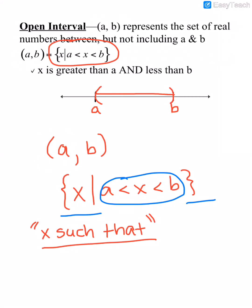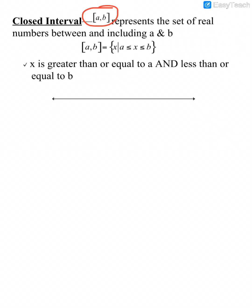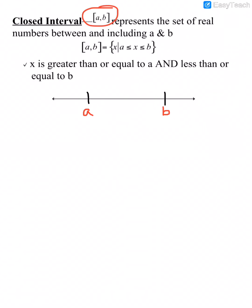That was an open interval where the two numbers are not included. A closed interval uses brackets instead of parentheses. So if those endpoints are included in the interval, we use brackets in the interval notation. We also use those same symbols on our graph on the number line when graphing our interval.